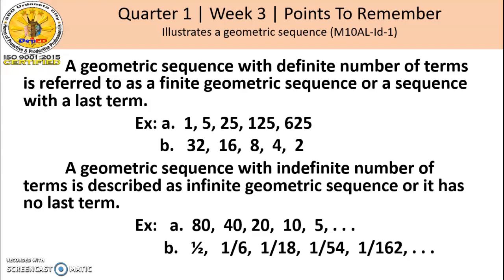A geometric sequence with an indefinite number of terms is described as an infinite geometric sequence, or it has no last term. Example: For letter A, 80, 40, 20, 10, 5, and so on. For letter B, we have 1/2, 1/6, 1/18, 1/54, 1/162, and so on. The three dots here denote an ellipsis, meaning it has no last term.